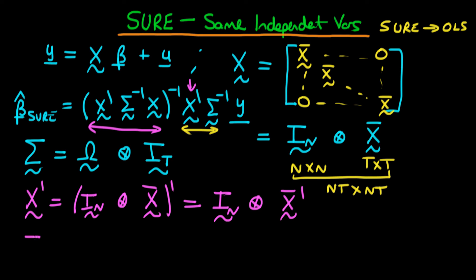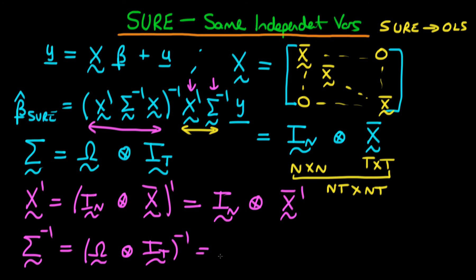Next, we can think about the inverse of sigma, the next term in the product. The inverse of sigma is the inverse of the Kronecker product of omega with I_t. From our rules about inverses of Kronecker products, this is equivalent to the Kronecker product of the inverse of omega with the inverse of the identity matrix I_t. Since the inverse of the identity matrix is just the identity matrix, that stays relatively simple. In the next video, we're going to see what happens when we combine x' with the inverse of sigma, and then work on the term inside the parenthesis.